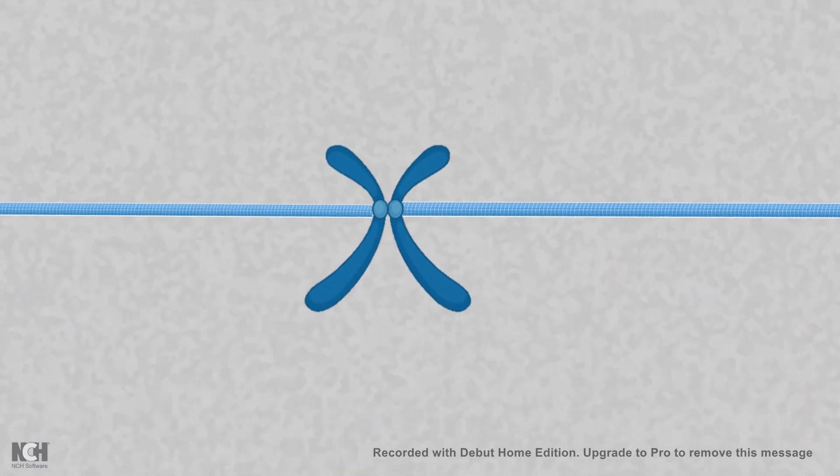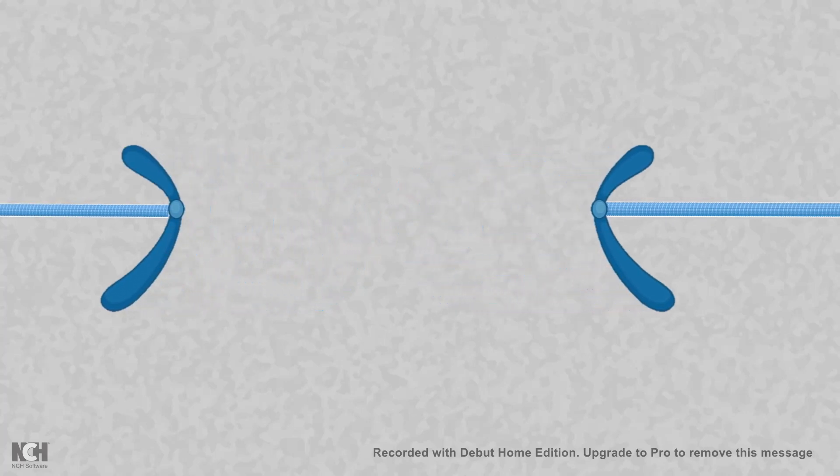CENP-A has to ensure that during segregation, the chromosomes are equally segregated and moving towards two poles.